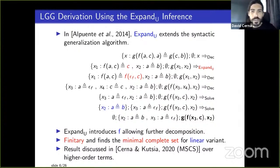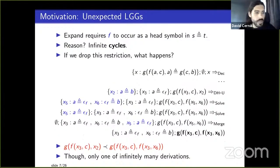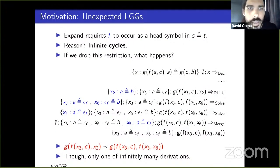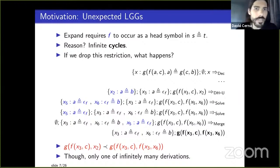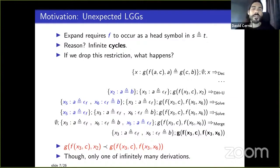The linear minimal completeness was discussed in another paper published around the same time in Mathematical Structures and Computer Science, specifically over higher-order terms. The expand rule requires that f must occur on either the left or right side as the head symbol of the anti-unification problem, to prevent infinite cycles — without this requirement, f symbols could be inserted continuously and the algorithm would not terminate.